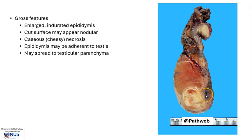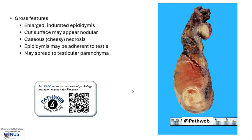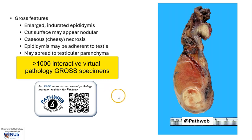Grossly, the epididymis is enlarged and nodular, and if there is also involvement of the testis, that would give rise to enlargement and caseous necrosis within the testicular parenchyma too. This cheesy yellowish appearance is what we see in caseous necrosis, and the epididymis is often adherent to the testis. There is a separate video describing the gross features of TB epididymitis on a virtual pathology specimen, available on the free online pathology resource PathWeb — registration is completely free and the link is in the video description.